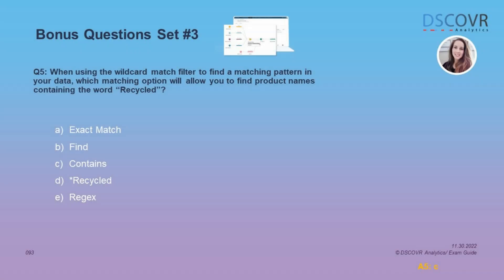Let's take a look at question number five. When using the wildcard match to find a matching pattern in your data, which matching option will allow you to find product names containing the word 'recycled'? The correct answer here is C.